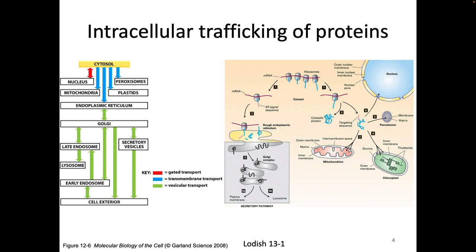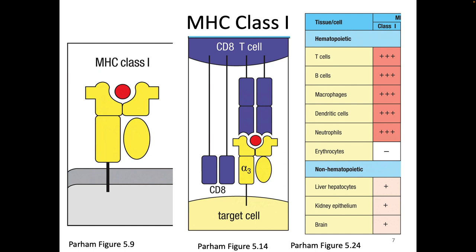So we are going to see some of these cellular locations throughout this process today. We're going to first talk about MHC class 1 and how MHC class 1 gets its peptides. Notice here MHC class 1 has this transmembrane domain. It's got its peptide binding cleft with a peptide in it, and it needs to have that facing outside the cell to show to a T cell. Class 1 processing is done by all nucleated cells.